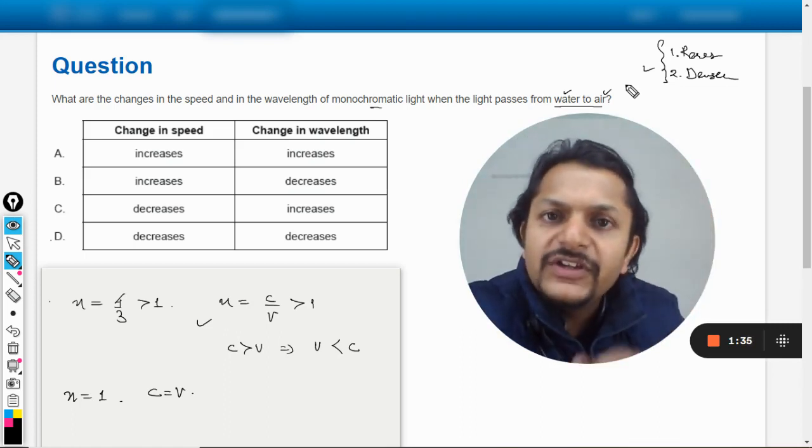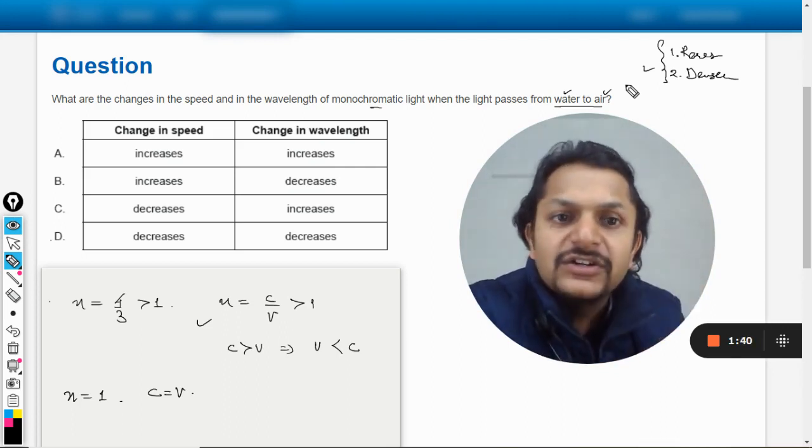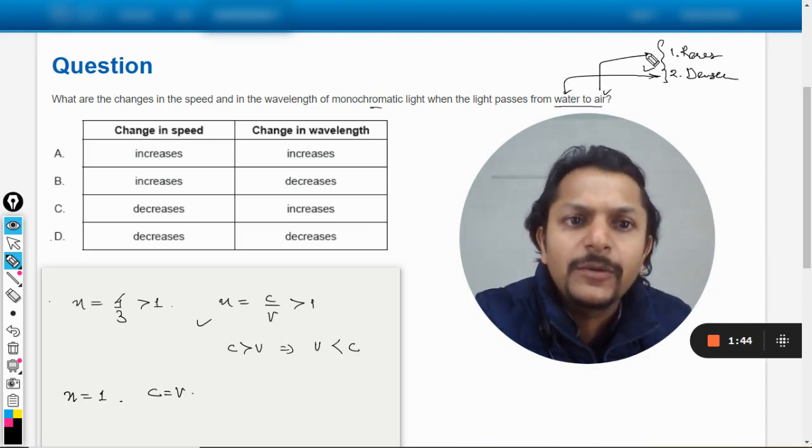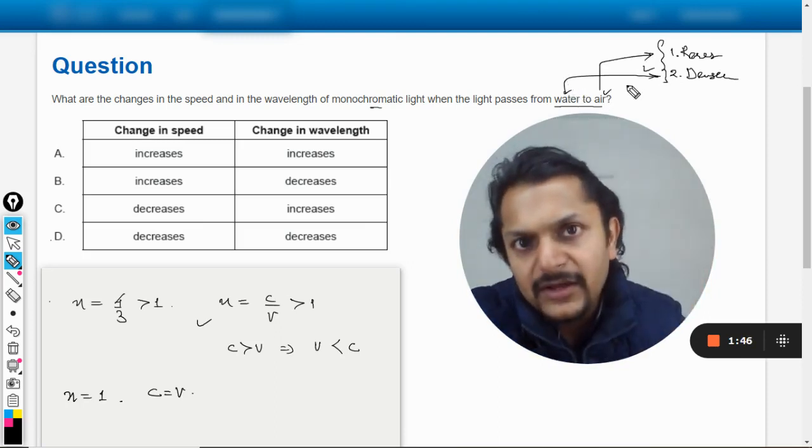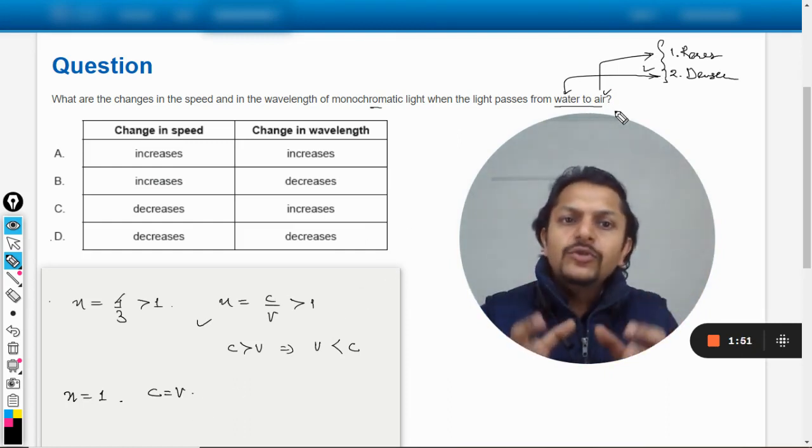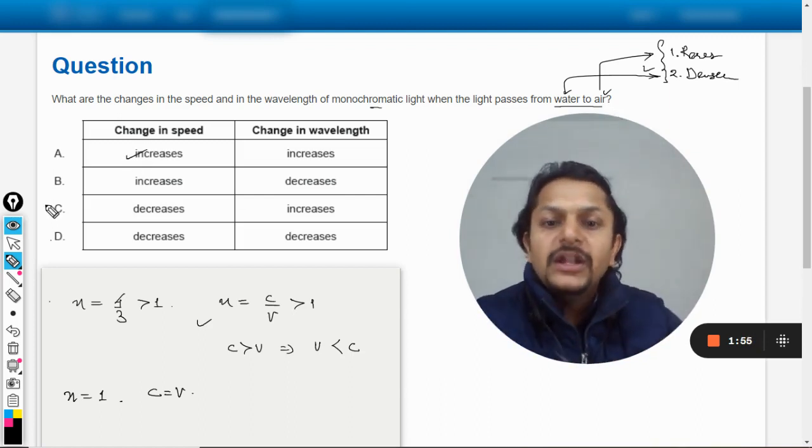Comparatively we start calling it rarer. And if the velocity of the light becomes lesser, we call it denser. So accordingly we can say that water is optically dense and air is optically rare. Okay, so accordingly we can say that when the light moves from water to air the speed will increase. No doubt about it.